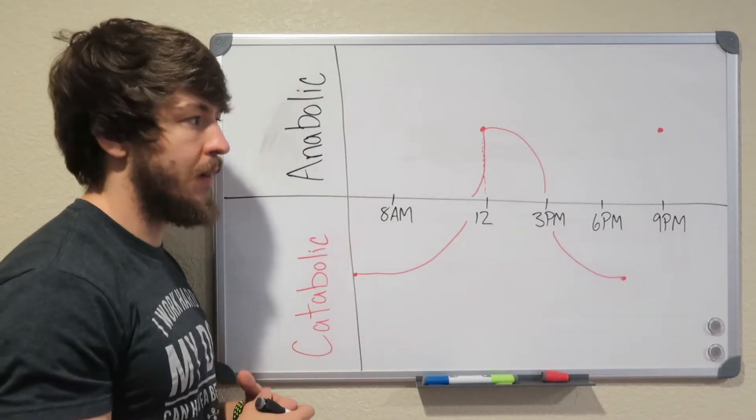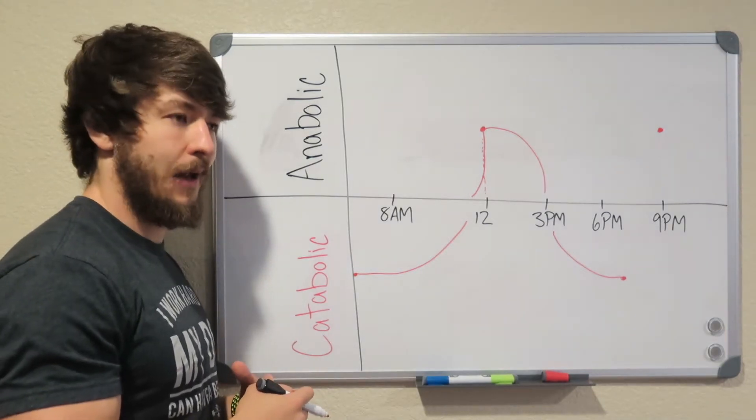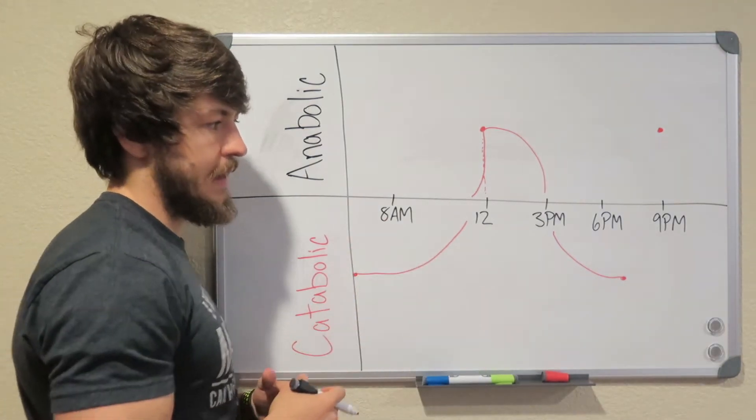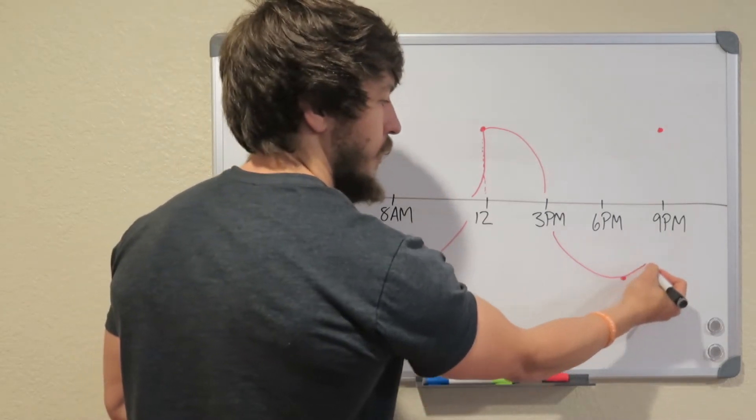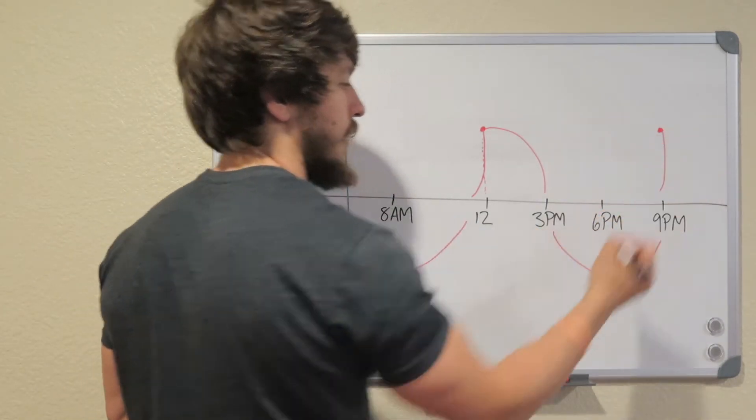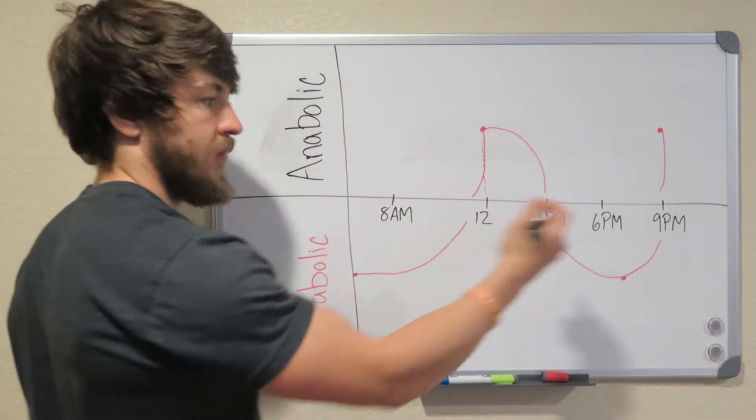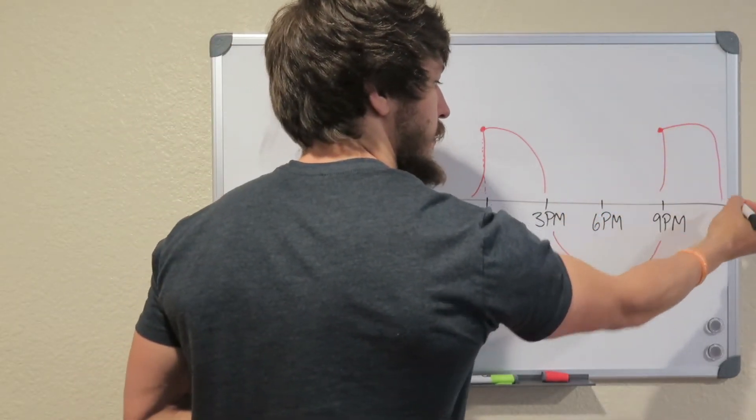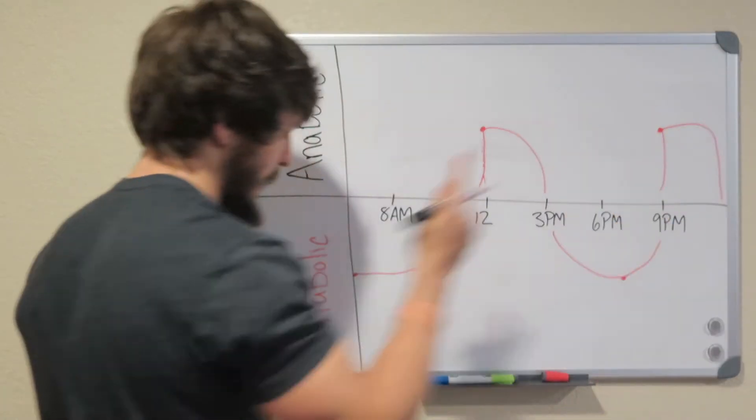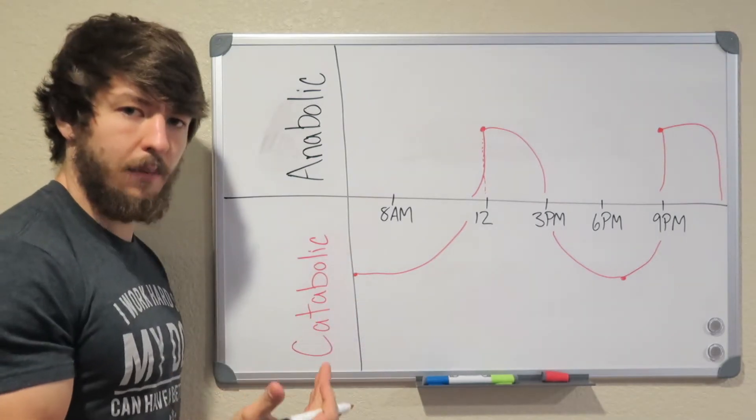Now, then we get home, we eat dinner. Usually this is a free-for-all for you guys, whatever mom or dad or wife or husband is cooking. But usually there's some protein there. So it's going to bump us back up to the anabolic phase. Once again, we'll be there for about three hours, and then we go to bed. And from when we go to bed, all the way back here, we'll only be in the catabolic phase.